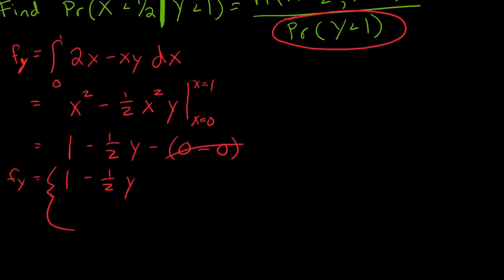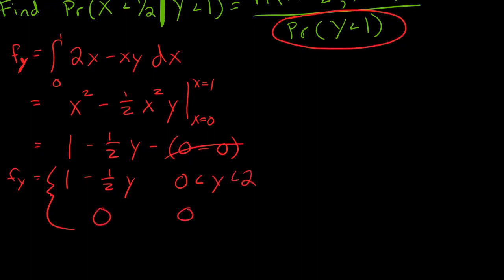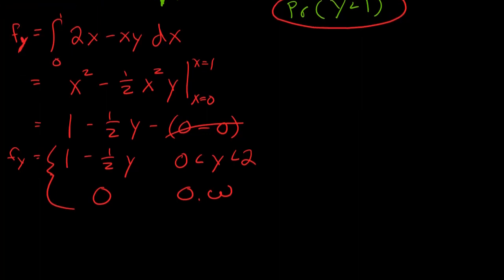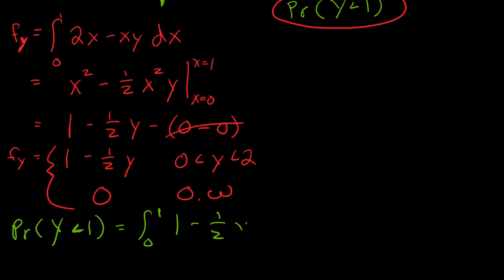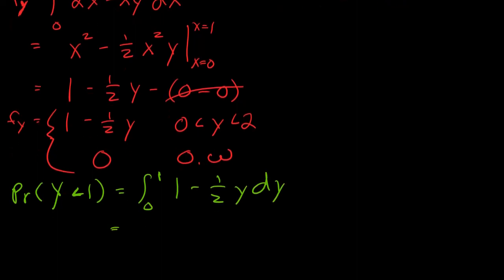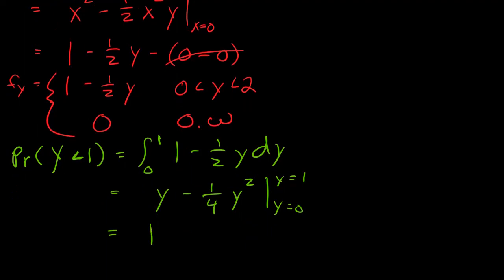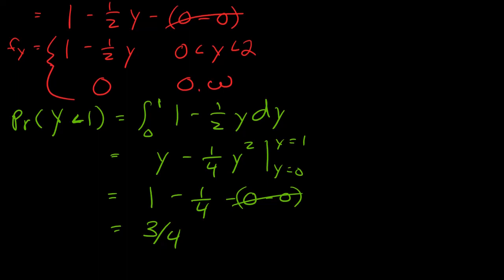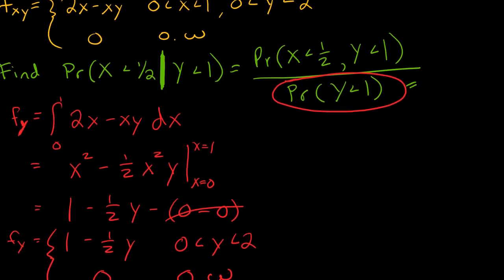y goes from 0 to 2, and it's 0 otherwise. Now, given this marginal, I can find the probability that y is less than 1. That equals the integral from 0 to 1 of 1 minus 1 half y, dy. Integrating gives y minus 1 fourth y squared, evaluated from 0 to 1. Plugging in: 1 minus 1 fourth, minus 0. That's 3 fourths. So the denominator equals 3 fourths.